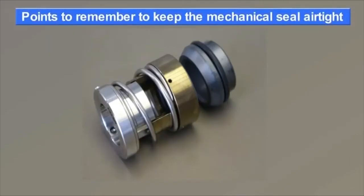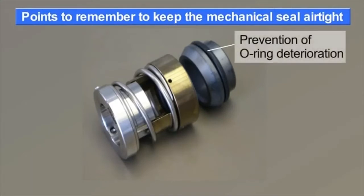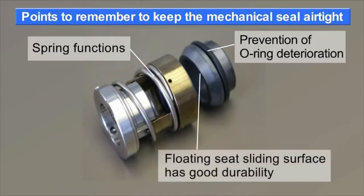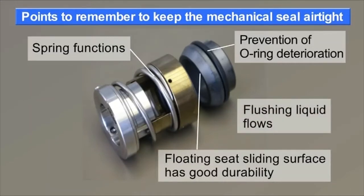Key points for maintaining mechanical seal functions are that the O-ring does not deteriorate, the spring which presses the sliding surface functions well, the floating seat's sliding surface has good durability, and flushing liquid used for cooling and cleaning the seal part keeps flowing.